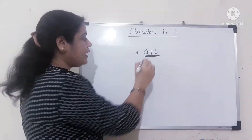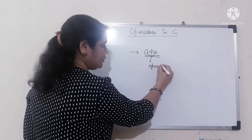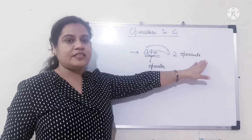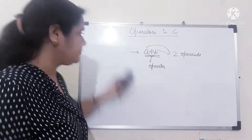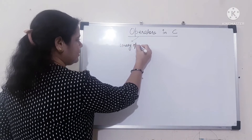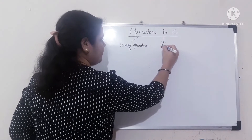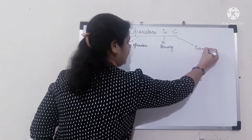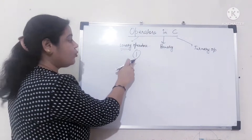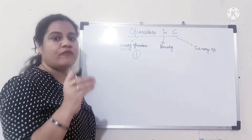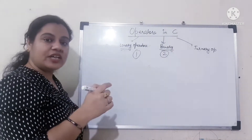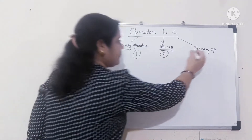Depending upon the number of operands, you can categorize operators in three ways. First is unary operators — unary means one — the operator which takes one operand as input. Second is binary operators, which take two operands as input. And third are ternary operators, which take three operands as input.